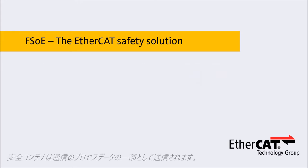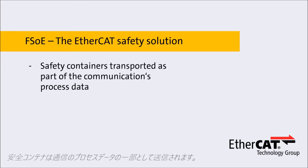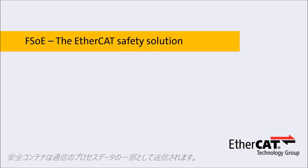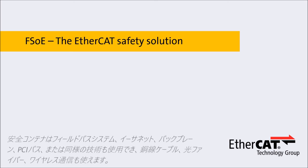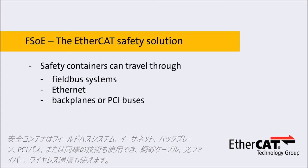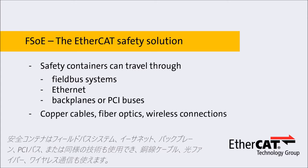The safety containers are transported as part of the communications process data. Whether data transfer is safe does not depend on the underlying communication technology and it isn't restricted to EtherCAT. Safety containers can travel through fieldbus systems, Ethernet, backplanes or PCI buses, and can make use of copper cables, fiber optics, and even wireless connections.